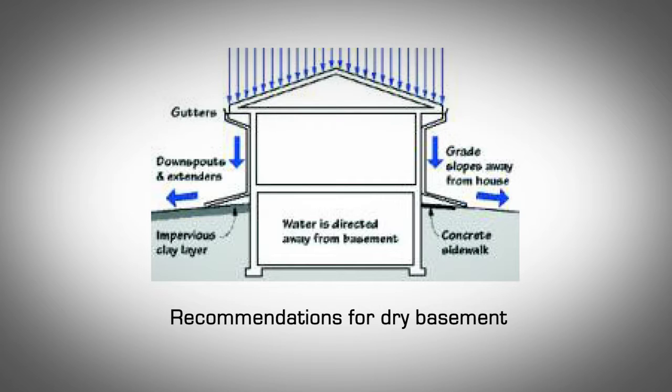Extend downspouts so that water flows away from the structure and does not pool next to the basement walls or basement windows. If downspouts are connected to the sewer system, disconnect them.